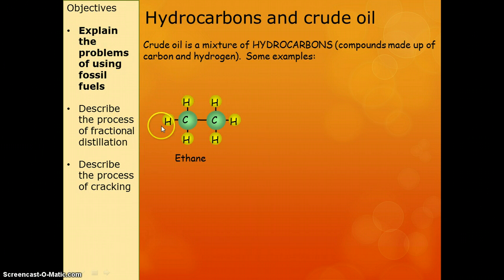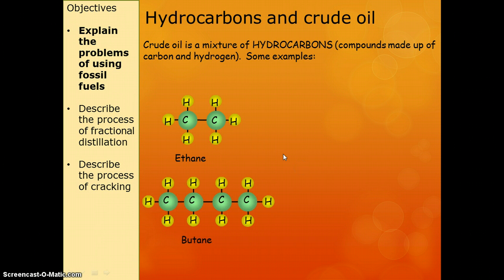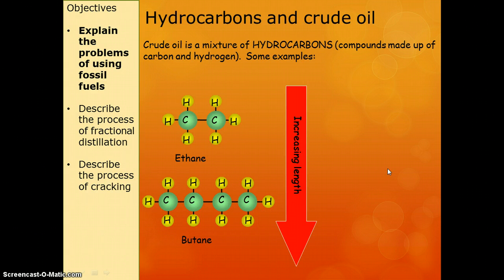Just to give you an example, this is ethane, so it's made up of two carbons and six hydrogens. It's a very small hydrocarbon. A bigger one is butane here, which has four carbons all linked together. We say this one is a longer chain, and when we're talking about the chain with hydrocarbons, we're talking about how many carbons are linked together. This is a chain of two, and this is a chain of four.